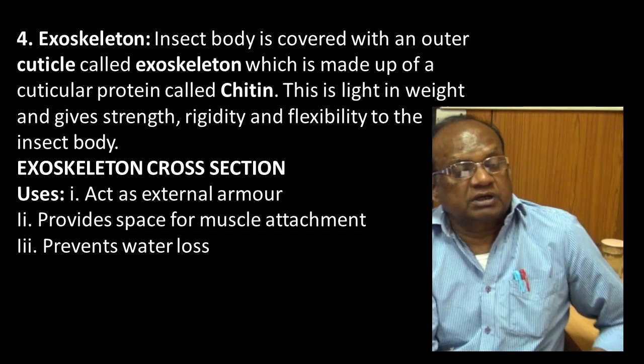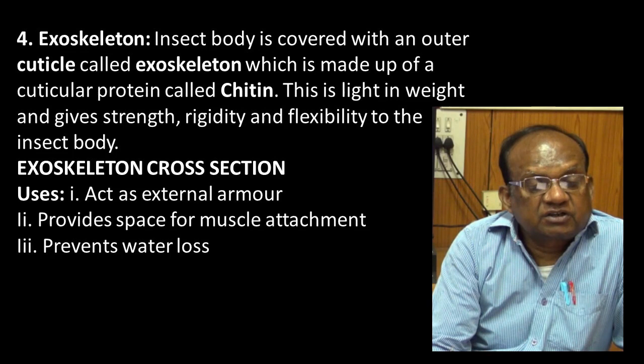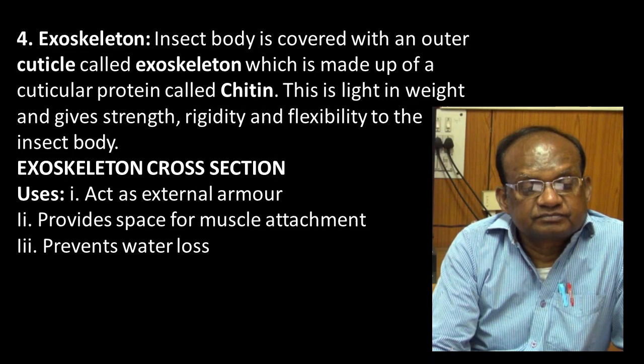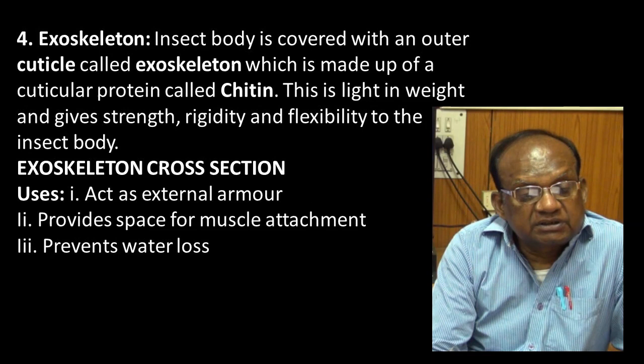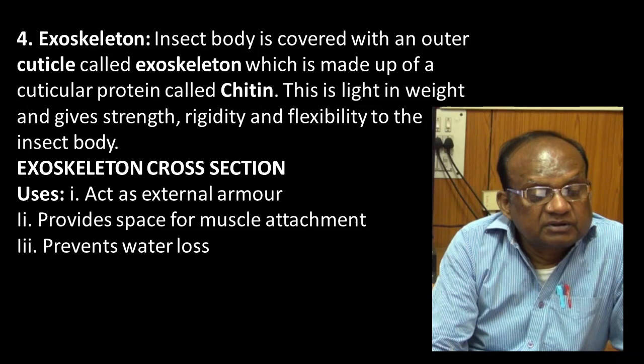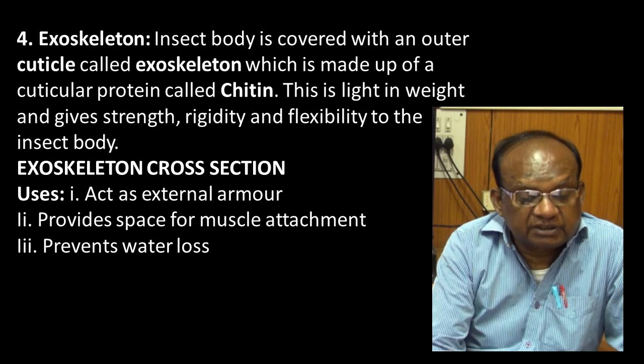Fourth factor is the exoskeleton. The insect body is covered with an outer cuticle called the exoskeleton, made up of a cuticular protein called chitin. Chitin is light in weight and gives strength, rigidity, and flexibility to the insect body — a boon to the insect fauna. The exoskeleton acts as external armor, provides space for muscle attachment, and prevents water loss.